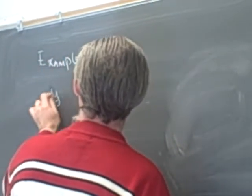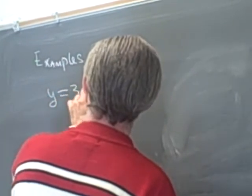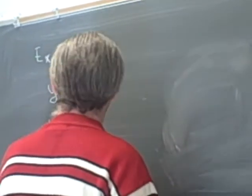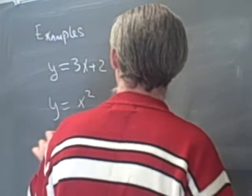So, if we look at y equals 3x plus 2, that's a polynomial. If we look at y is equal to x squared, that's a polynomial.